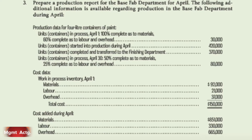Rather than use an example from the textbook, I decided to use the example you see on the screen here. This is review problem number one at the end of the chapter, and all we're going to do is number three of this. So let's read and see what we have: prepare a production report for the base fab department for April.